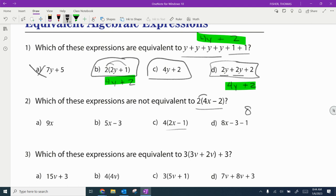2 times 4x is 8x. 2 times negative 2 is negative 4. And then let's just see if the other ones are not equivalent to that. So right away you can tell 9x is not equivalent to that. 5x minus 3 is not equivalent to that.